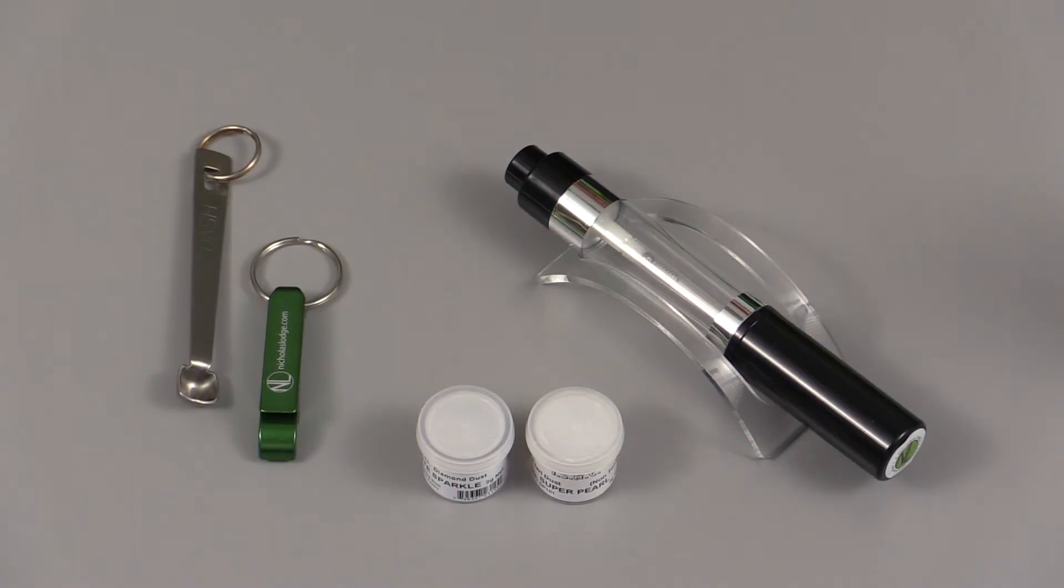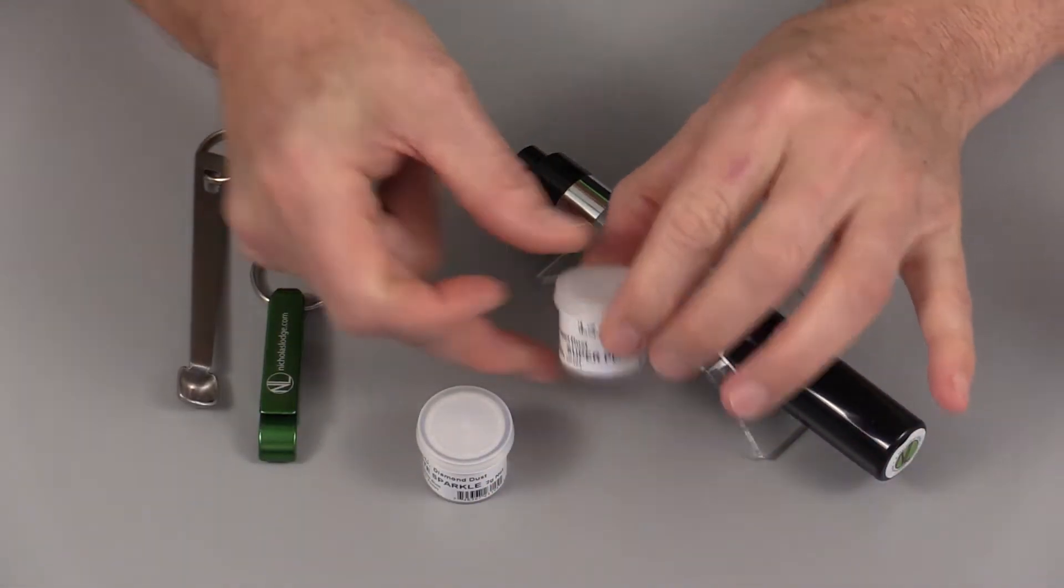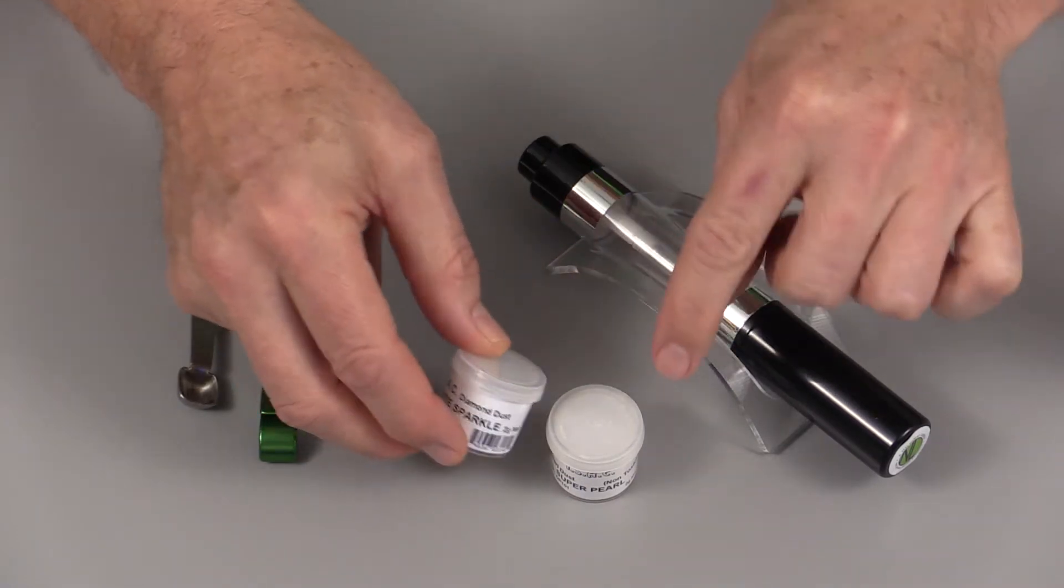This is the pump brush part of the Nicholas Lodge collection. Pump brush is very useful for using with luster dust. I only use this actually for two products: super pearl dust and white sparkle dust. White sparkle just has slightly larger particles.